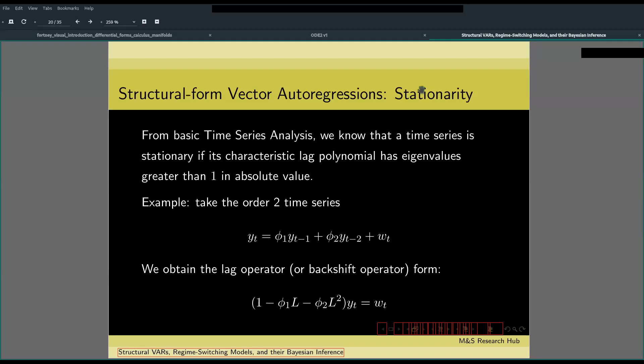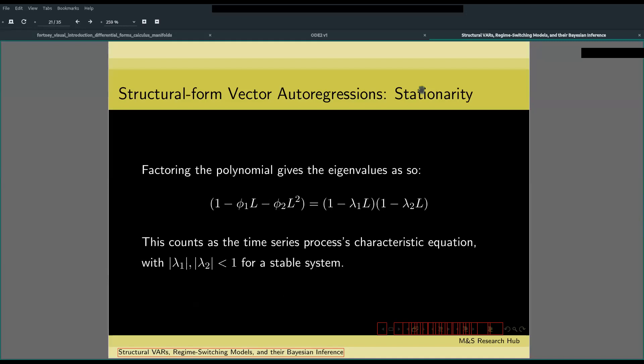So we have this scalar autoregressive process of order two. We can obtain the lag or backshift operator, then use this to calculate the eigenvalues.